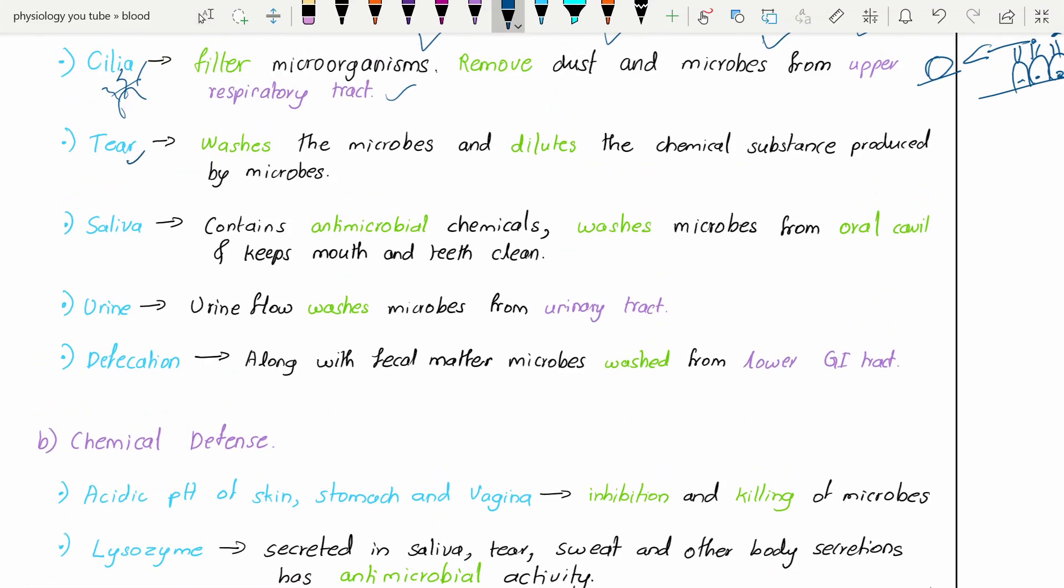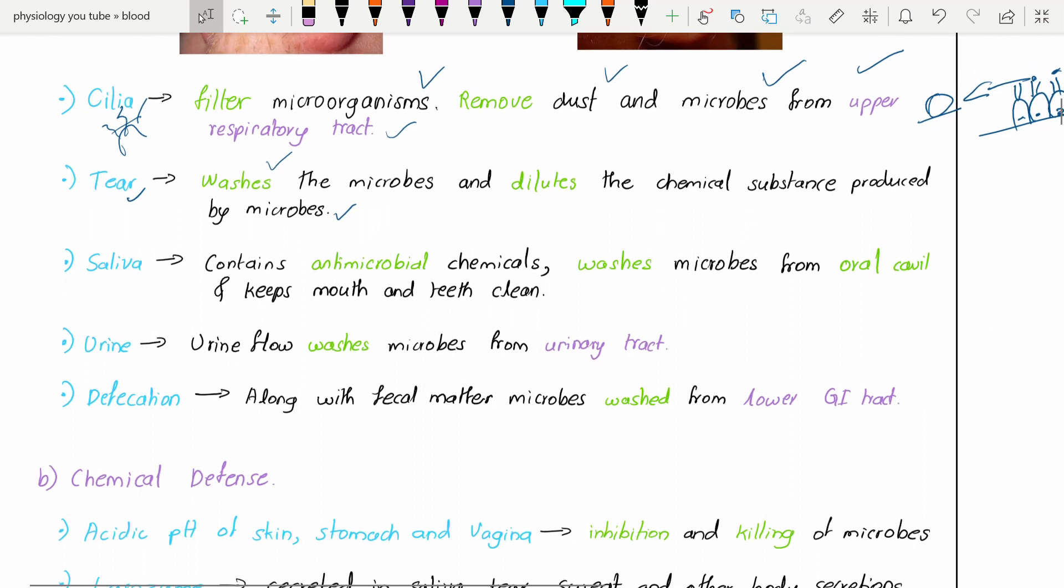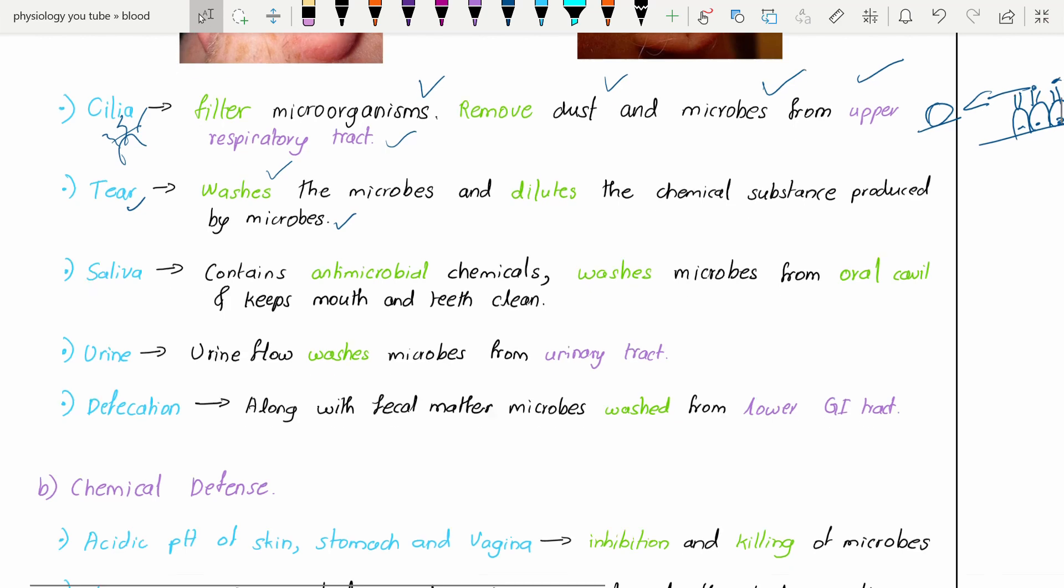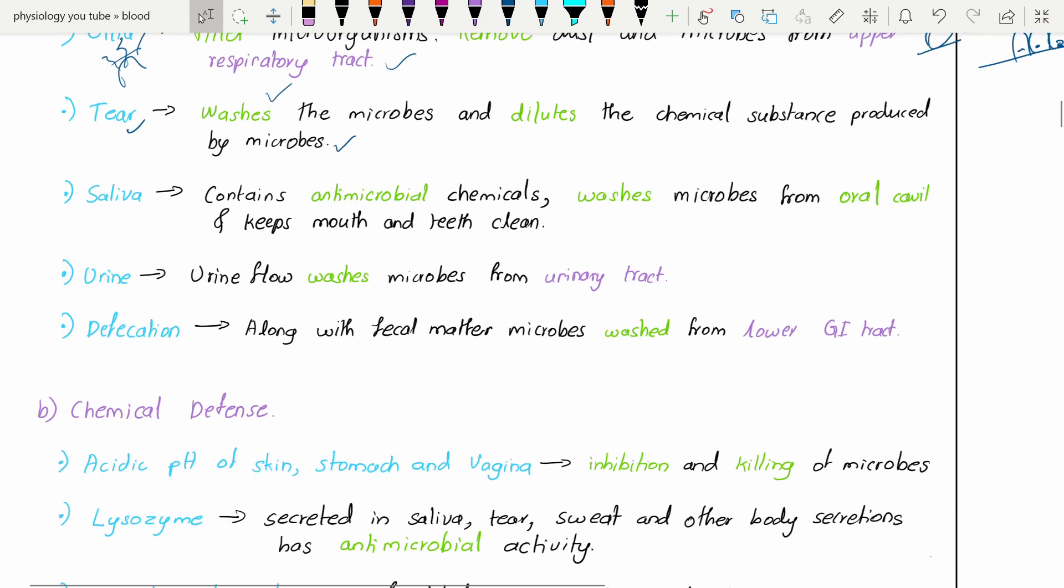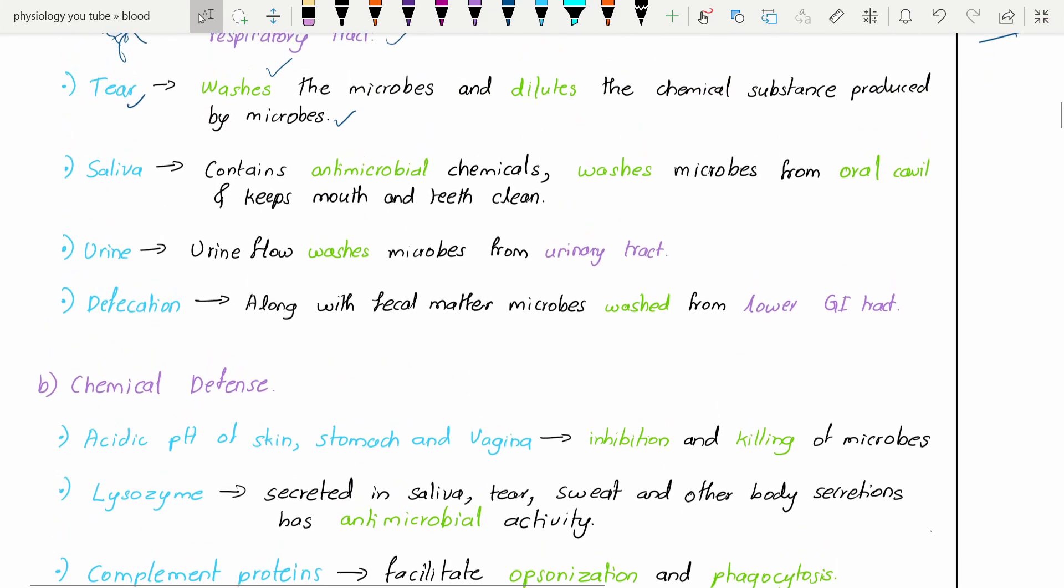Tears - actually when we cry we get tears, but it has some other roles. It washes the microbes and dilutes the chemical substances produced by the microbes. As we know, we blink a lot of times - approximately a blink is around 0.025 seconds. This blink will spread the layer of tear film throughout the eye and helps prevent the growth of microbes and doesn't cause dryness of the eye.